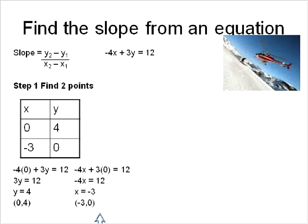First off, I would find two points and now the next step is that I'm going to actually take these two points and plug them into my slope equation. So my y2 is 0 minus y1, 4.